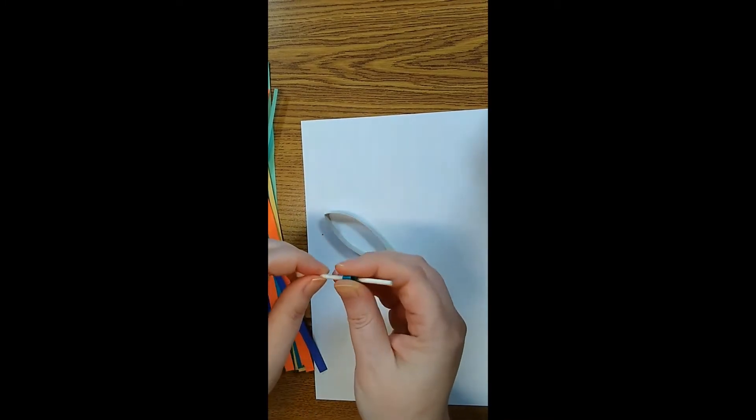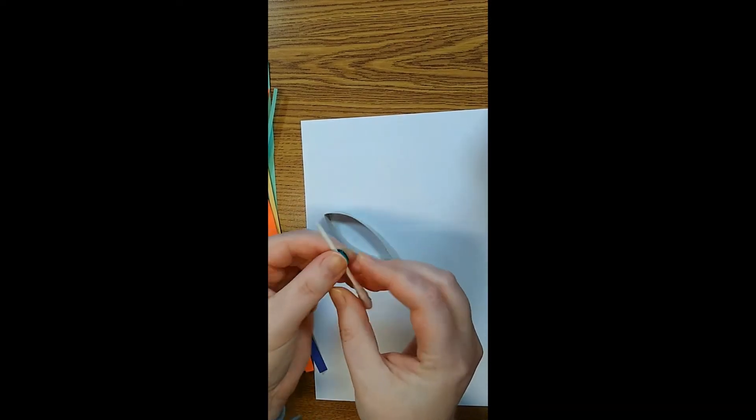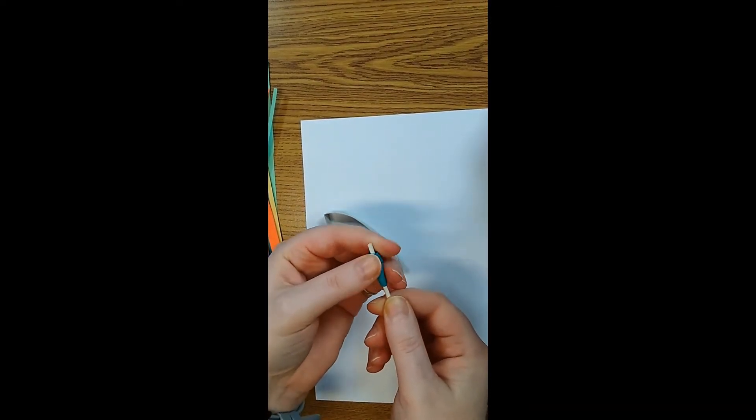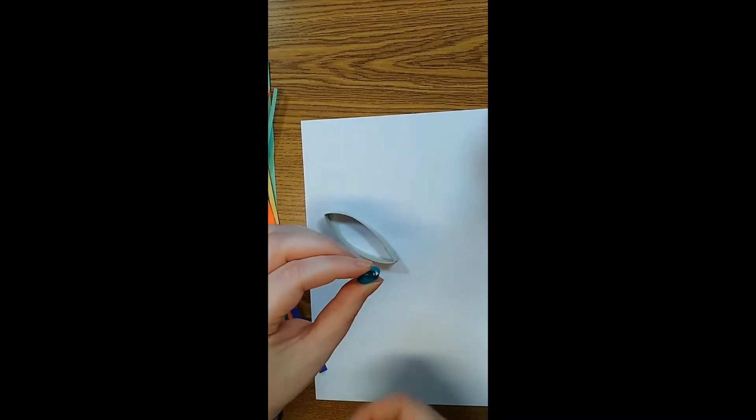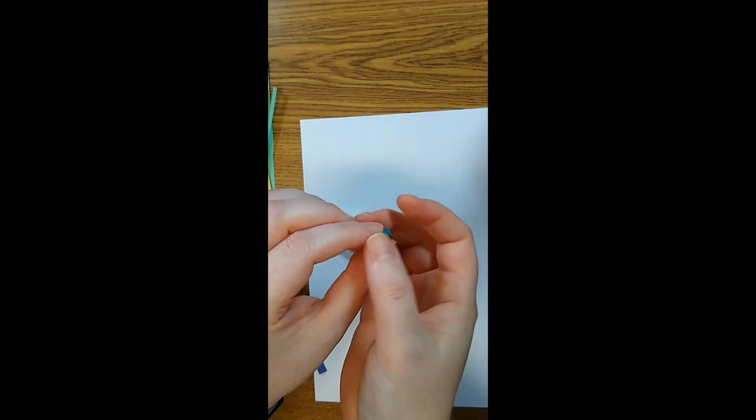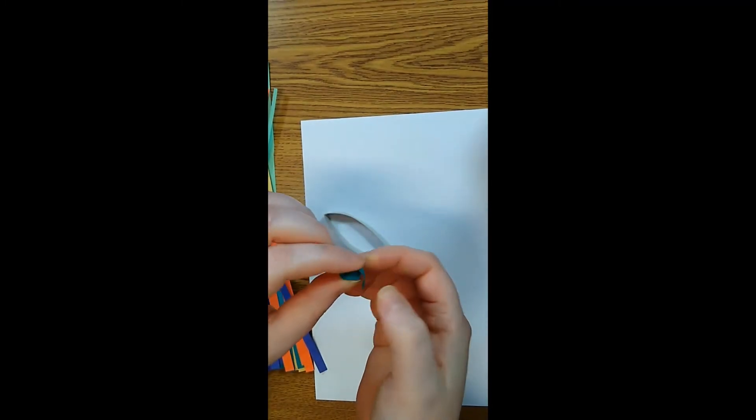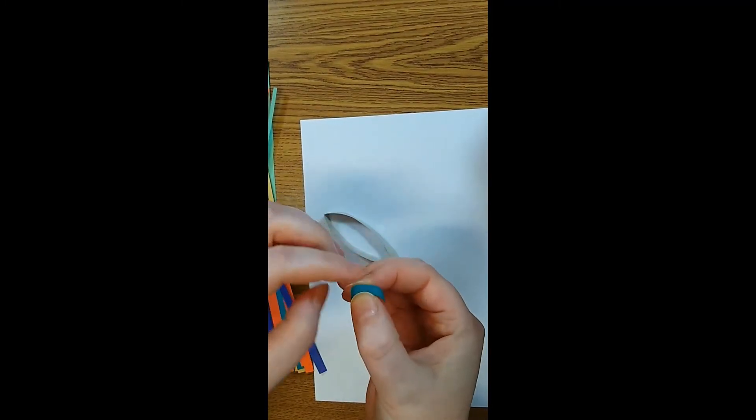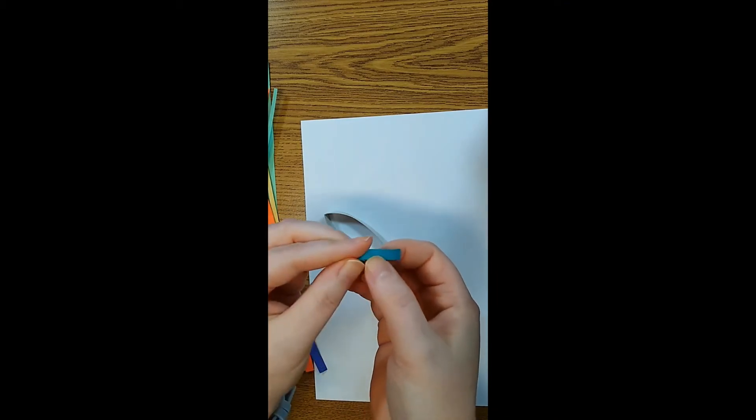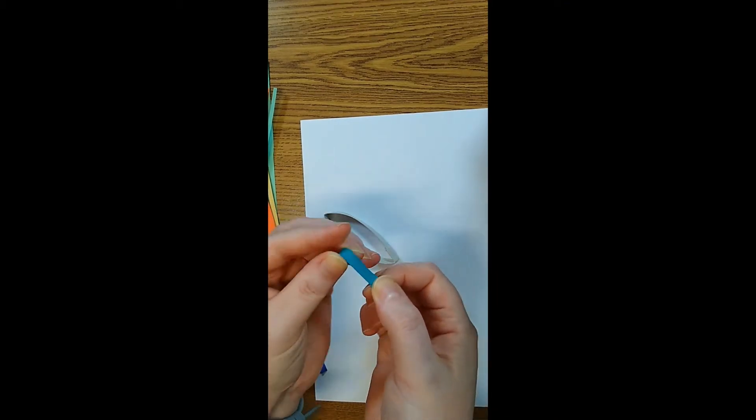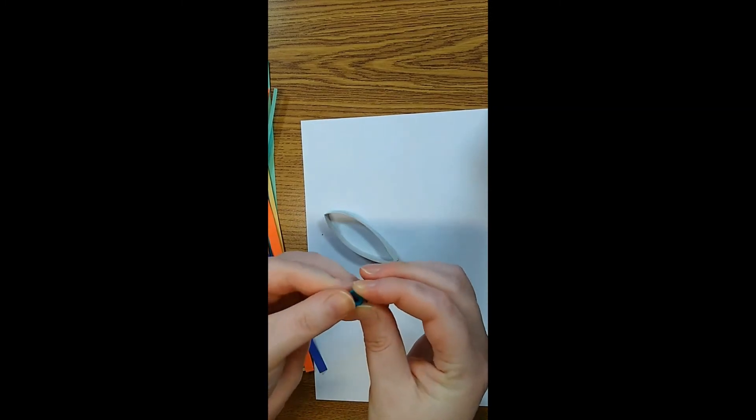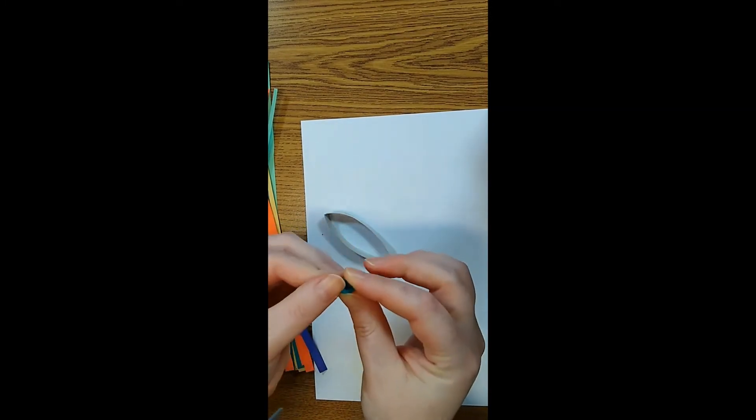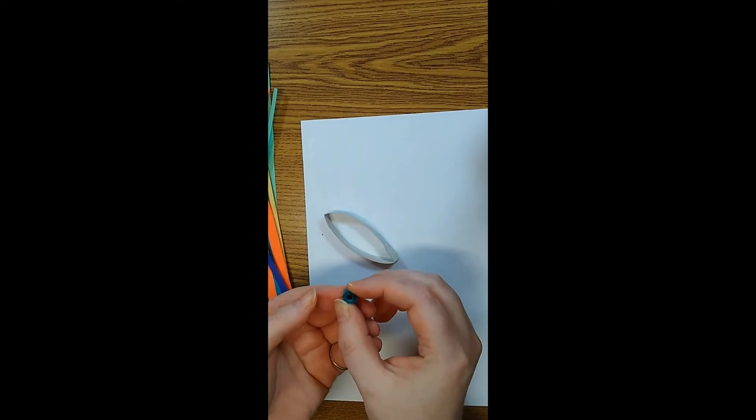So once that's rolled up all the way, you can slide it off the cotton swab. You can see mine's already unrolled a little bit and that's fine. Usually you can just hold the center and pull it tight. So this one's very densely rolled. If I want to loosen it up, just let go a little bit.